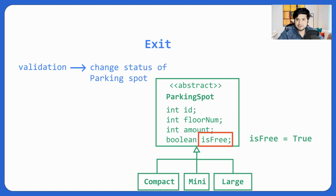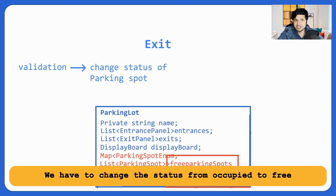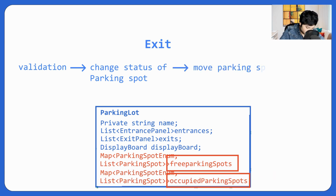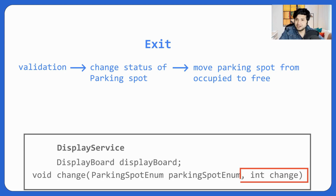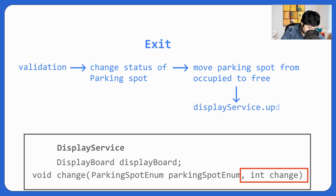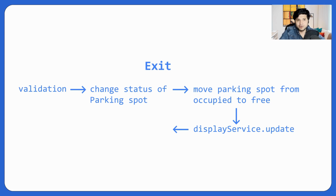This parking spot was occupied previously but now it's free, so we move it from occupied to free. Then we calculate the amount and also update the display service that one parking spot has moved to free — so we call display_service.update() with the proper parameters.